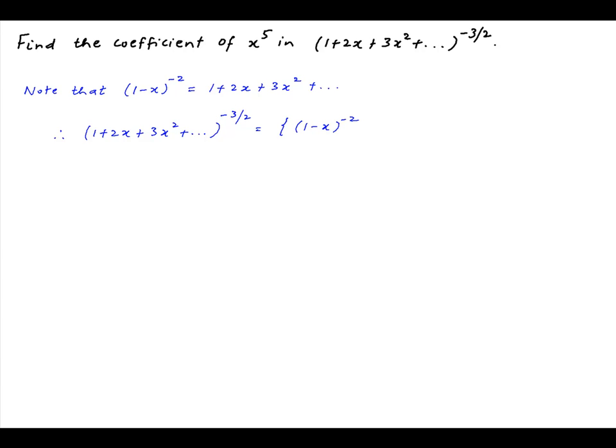This is equal to 1 minus x raised to the power minus 2 raised to the power minus 3 upon 2, which simplifies to 1 minus x raised to the power 3.